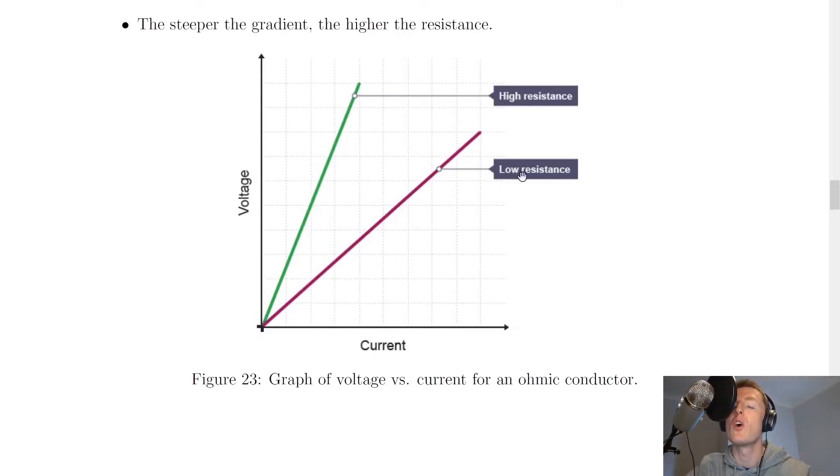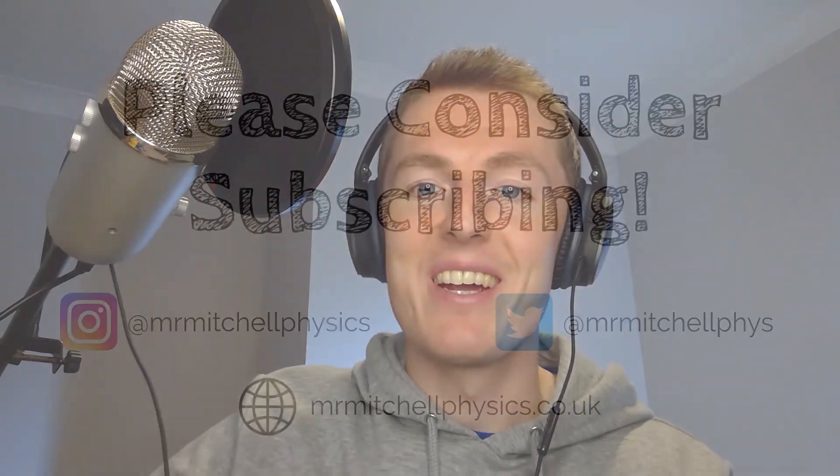To summarize: ohmic conductors like resistors should have a straight line through the origin on a graph of voltage against current, and that shows that resistance is constant. That's all for this video — hope you found it useful, give it a like, subscribe, and I'll see you in the next one.